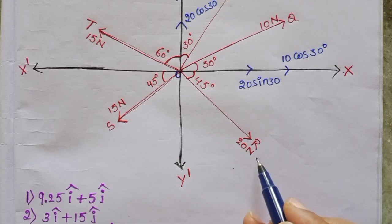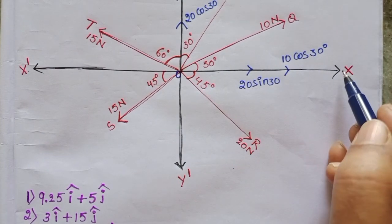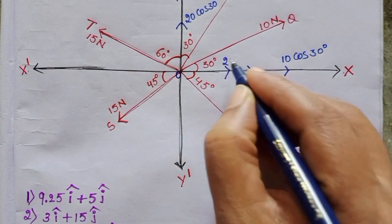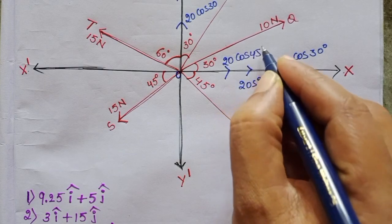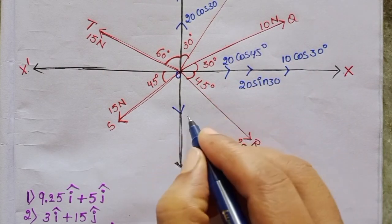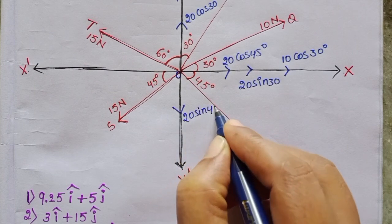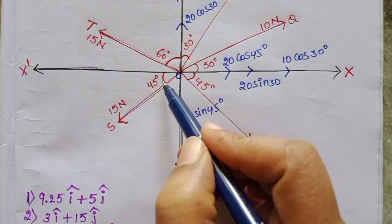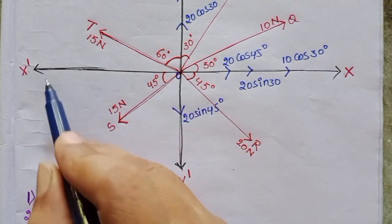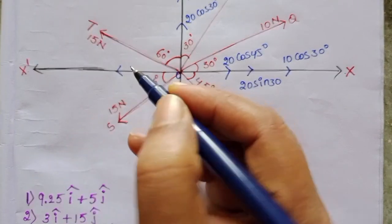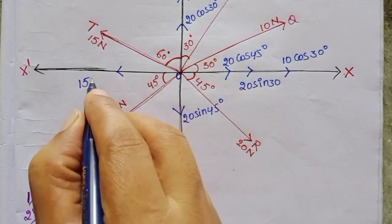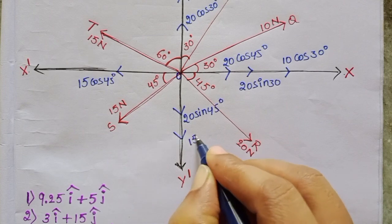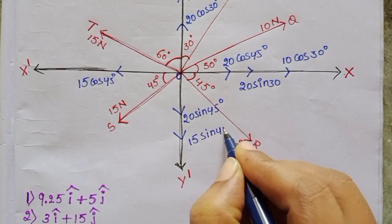The magnitude of this force is 20 newton and it makes 45 degrees with the x axis. So along the x direction, the component of this force is 20 cos 45, and along the negative y axis, 20 sin 45 degrees. The next force has magnitude 15 newton and it makes 45 degrees with the negative x axis. So along this direction the component is 15 cos 45 degrees, and along the y direction 15 sin 45 degrees.